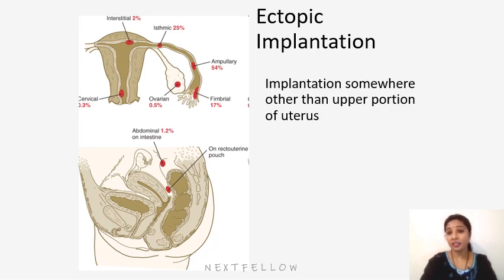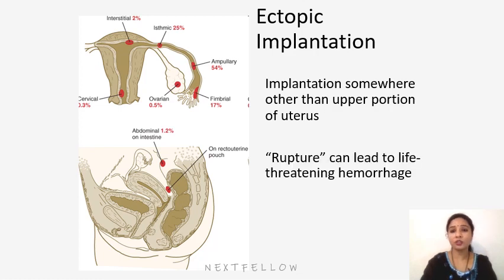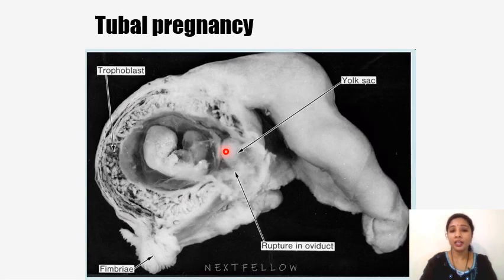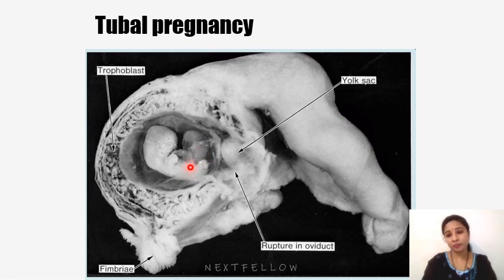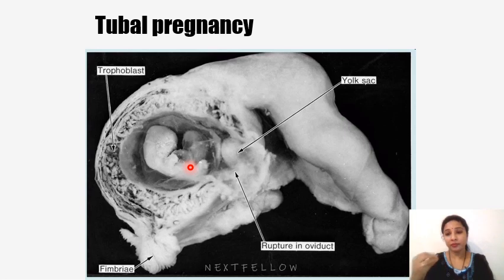Implantation somewhere other than the upper portion of the uterus is considered ectopic implantation, and rupture can lead to life-threatening hemorrhage. The most common variety is tubal pregnancy, where the embryo starts developing within the fallopian tube or oviduct. The site of fertilization is the ampullary end of the oviduct. If instead of transferring into the uterine cavity the embryo settles within the uterine tube, that leads to tubal pregnancy.